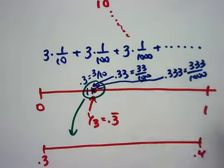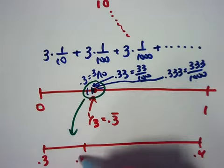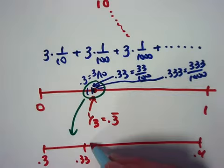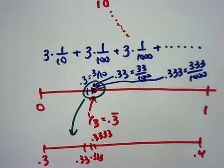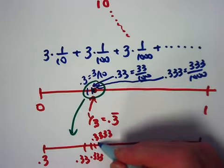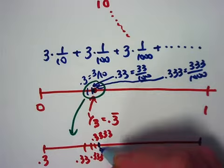Point 0.33 might be right there. Then 0.333, then 0.3333, et cetera. And 0.3 repeating might be right there.